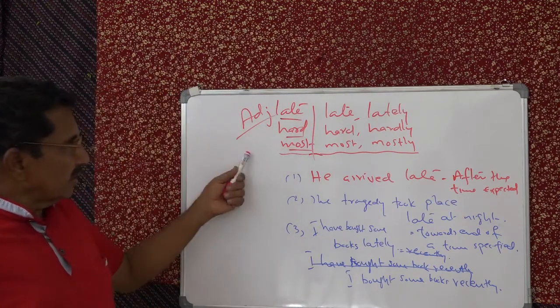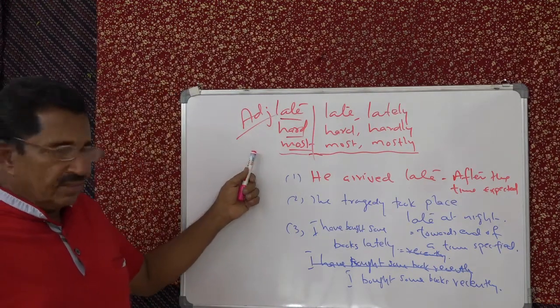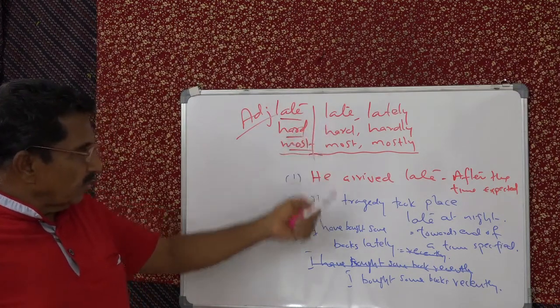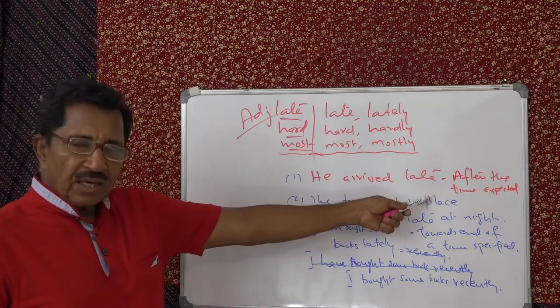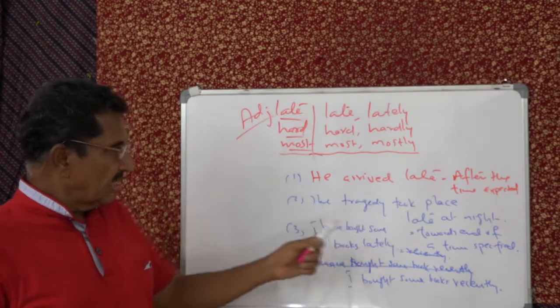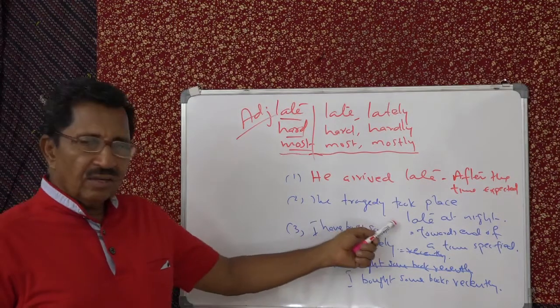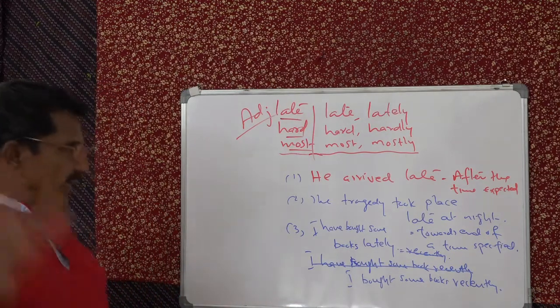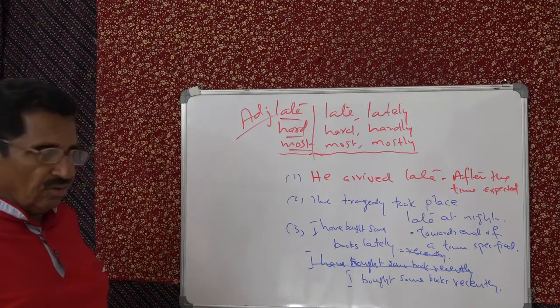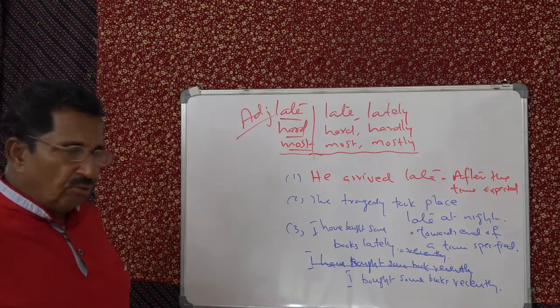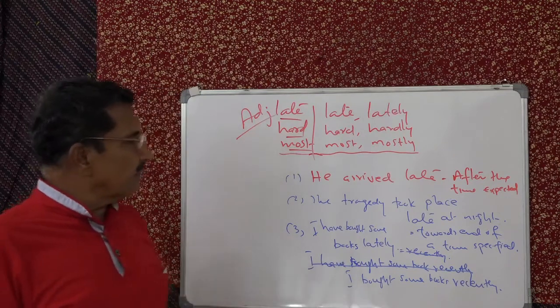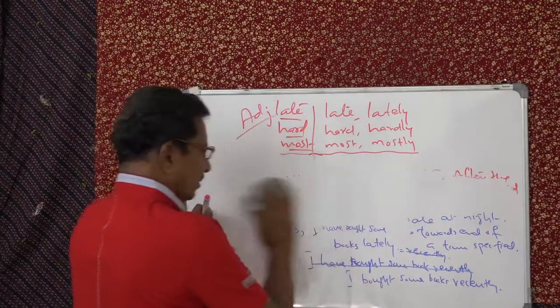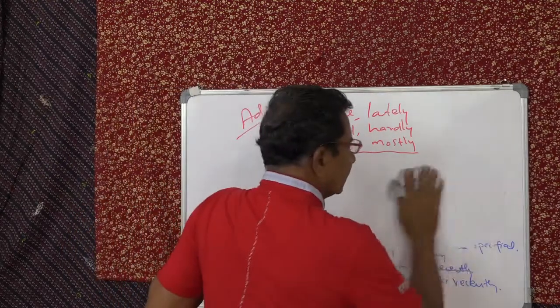So late, adjective means late arrival. Somebody comes, that's his habit - late. Late has two meanings. One is after the time expected, the train comes late. Then the tragedy took place means the time specified at the end. At night. Towards late at the end, late at night. Not when the night was young. Then I have bought lately means recently. So one adjective and two adverbs. Of course there is difference.